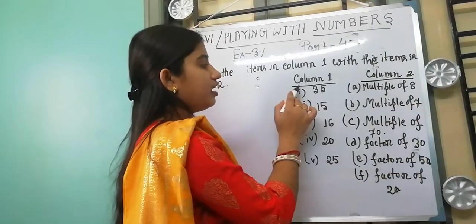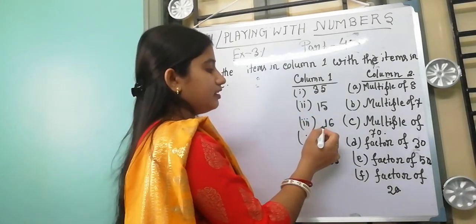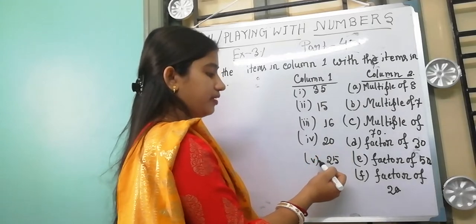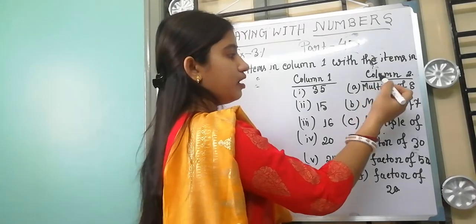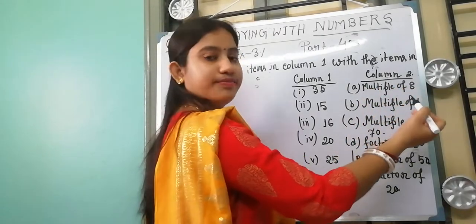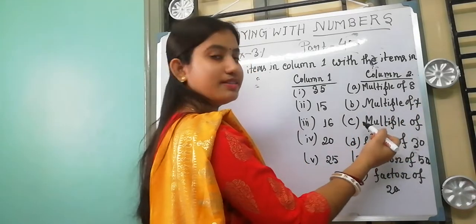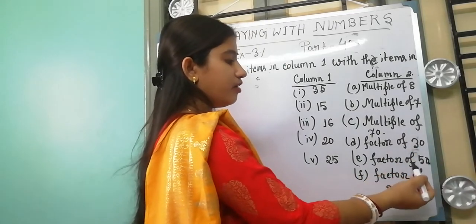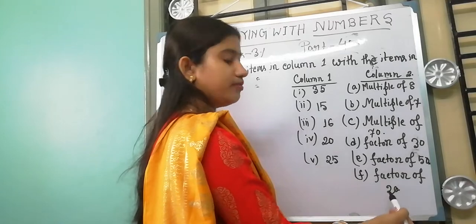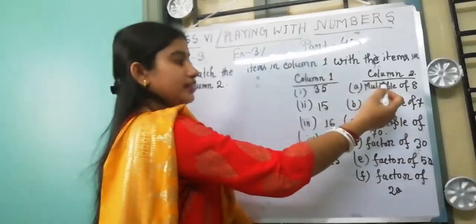This is column 1 and this is column 2. In column 1 the items are: 35, 15, 16, 20, and 25. In column 2, the options are: A - multiple of 8, B - multiple of 7, C - multiple of 70, D - factor of 30, E - factor of 50, and F - factor of 20. So first we find matches from column 2.